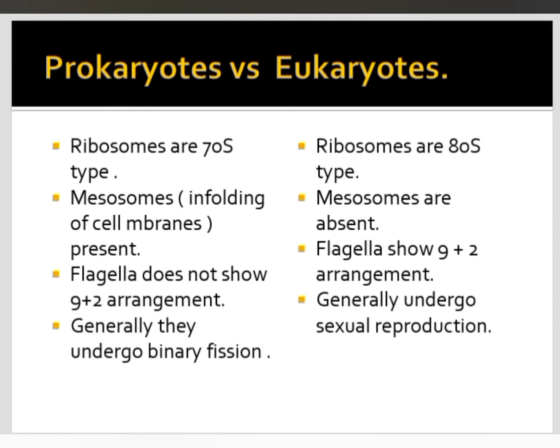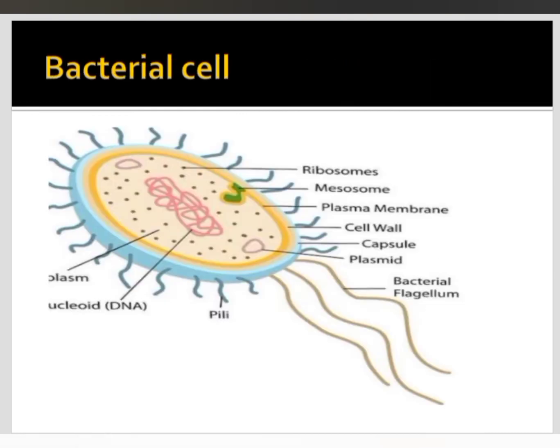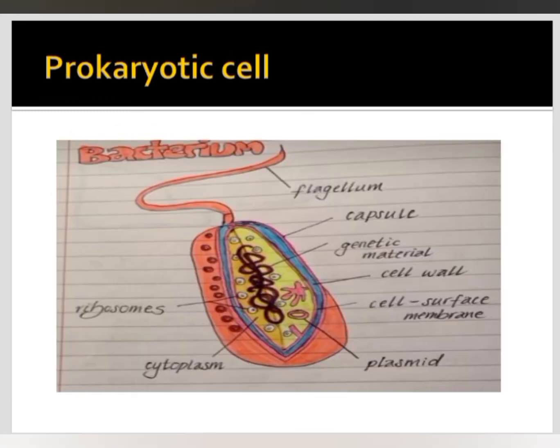Prokaryotes generally undergo binary fission, as we all know, whereas eukaryotes do not show binary fission — they most commonly undergo sexual reproduction. These are the main differences between prokaryotes and eukaryotes. The cell structure of bacteria includes mesosomes and 70S type ribosomes.